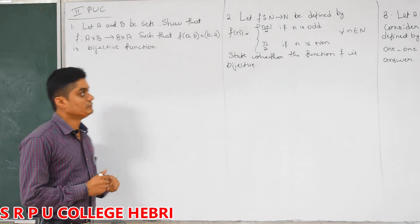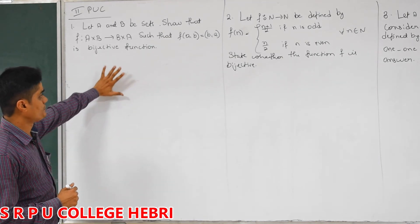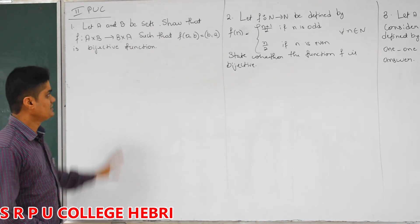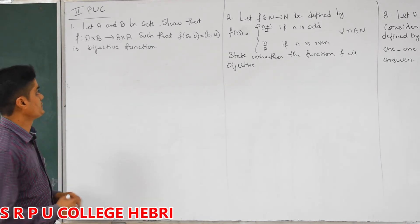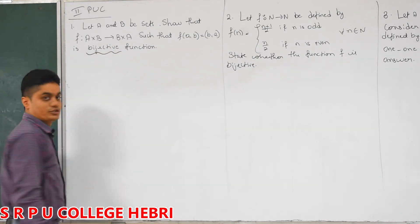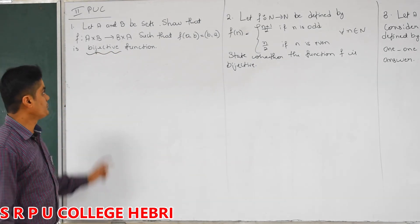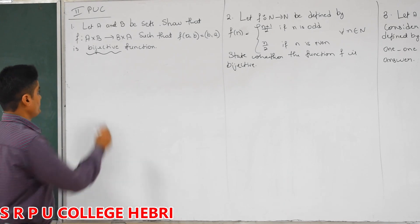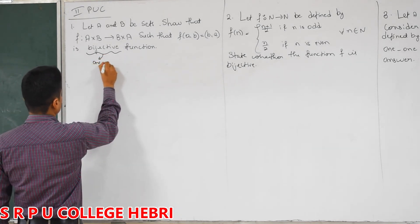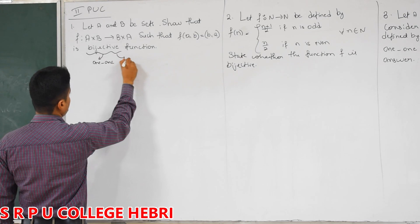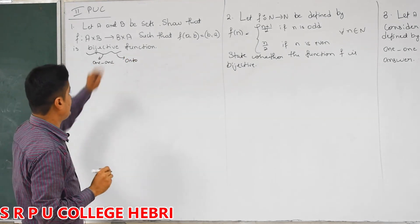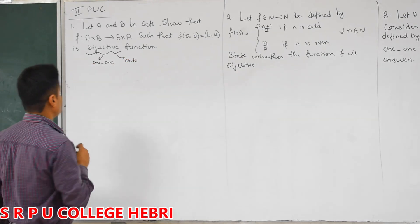So, this is a repetition of the concept which we did in the last classes, last videos. Repeated concept, nothing new. Maybe you remember what you mean by bijective function. Bijective means it is both one-one and onto. When it is both one-one and onto, then that function is called a bijective function.